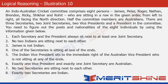The question mentions 8 individuals who are part of an Indo-Australian Cricket Committee. These 8 persons are sitting in a row, all facing the same direction — North. Four of the committee members are Australians and the rest 4 are Indians. There are 3 secretaries, 2 joint secretaries, 2 vice presidents, and a president in the committee. Using the 8 statements given, we need to find the nationalities and posts of all 8 individuals. Pause the video, attempt the question on your own first, and then proceed to the solution.